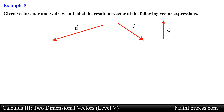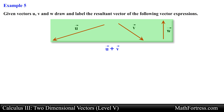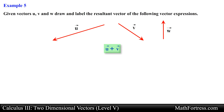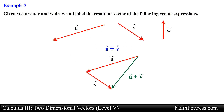Given vectors U, V, and W, draw and label the resultant vector of the following vector expressions. In this problem we are provided with three distinct vectors each with their own magnitude and direction. The first expression asks us to find and draw the resultant vector when vector U and vector V are added. We geometrically find the sum by applying the triangle law, aligning the tail of vector V with the head of vector U. The resultant vector has its initial point at the tail of vector U and its terminal point at the head of vector V.